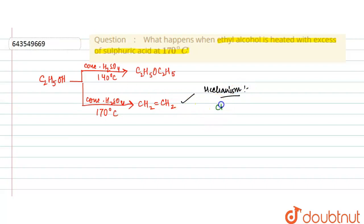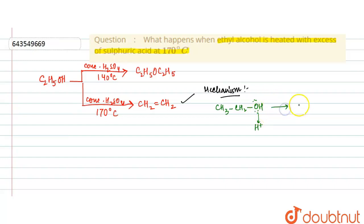Ethyl alcohol — its formula is CH3CH2OH. It abstracts H+ ions from H2SO4. The oxygen, which contains a lone pair of electrons, abstracts the H+ ions and forms OH2+.